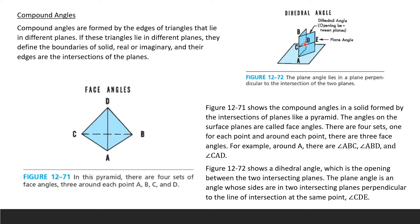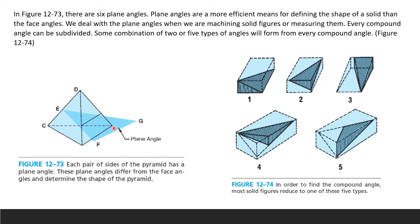A dihedral angle is the opening between two intersecting planes. The plane angle is the angle between the sites in two intersecting planes, perpendicular to the plane of intersection. There are six plane angles in a pyramid figure. Plane angles are more efficient for defining the shape of a solid than face angles. Every compound angle can be totally subdivided into some combination of five types of angles. Most solid figures reduce to one of these five types.